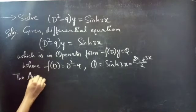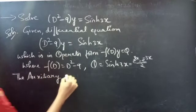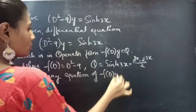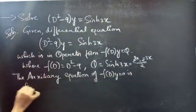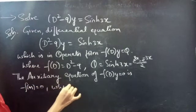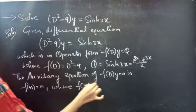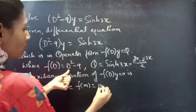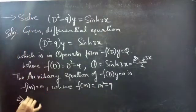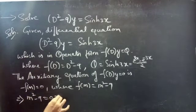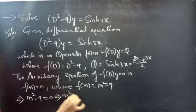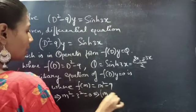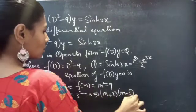Firstly we find the complementary function using the auxiliary equation. The auxiliary equation of f(D)·y = 0 is f(m) = 0, where we replace differential operator D by m in f(D). So we get f(m) = m² - 9, and the auxiliary equation becomes m² - 9 = 0. Writing 9 as 3², this is of the form a² - b² = (a+b)(a-b) = 0.